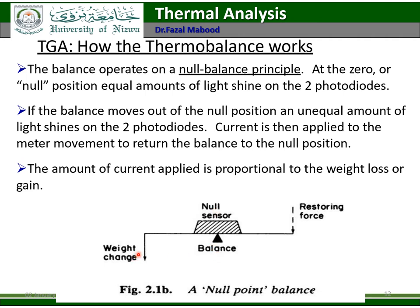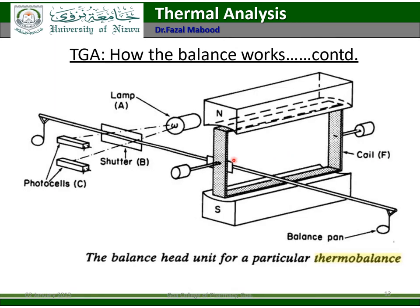Here you can see the light source and the shutter, and these two are the photodiodes or photo cells. At the null point, the shutter is balanced so there is no unequal light shining on the photodiodes and no generation of current. But when there is weight loss, the rod becomes imbalanced, and then the light shines more or less on the photodiodes. Current is generated and sent to the balance to return it to the null position again.